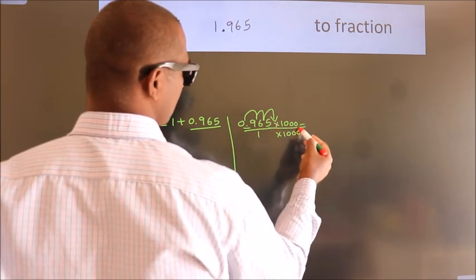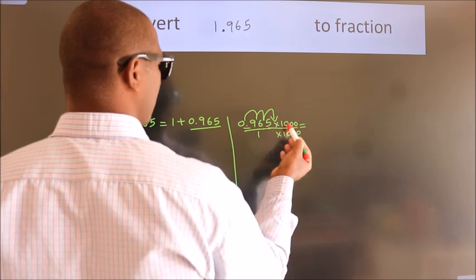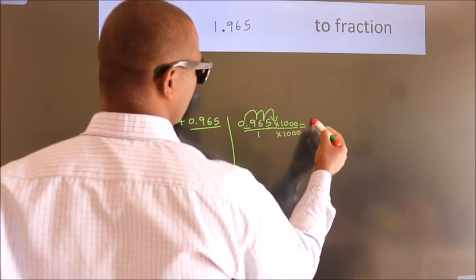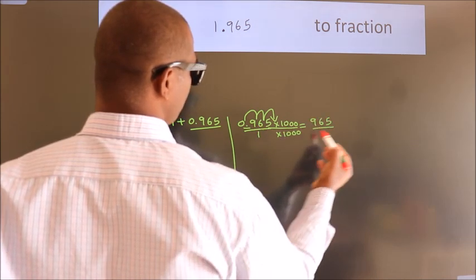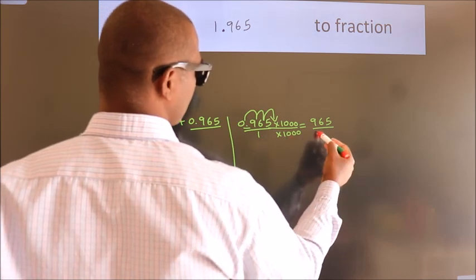Next, 0.965 into 1000 equals 965. 1 into 1000 equals 1000.